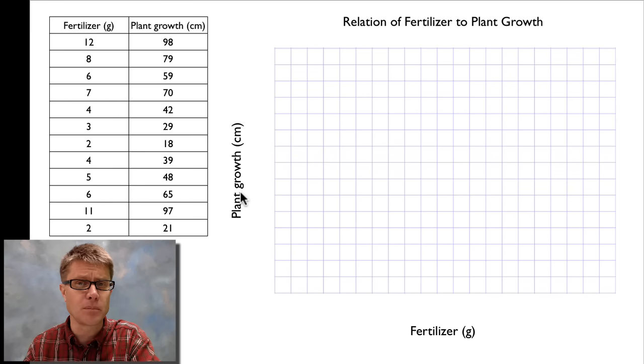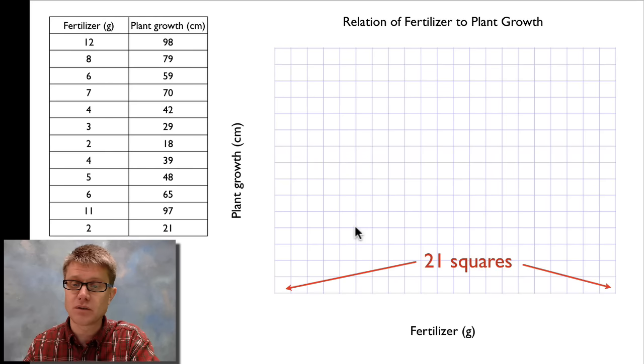Next thing I want to do is I want to put numbers and tick marks or major grid lines on both the x and the y-axis. This is hard to do. Let's say you're doing a test and you're given this amount of graph paper. You want to make sure that you use all of the graph paper. That's going to give us a better graph and it's going to allow us to look at patterns in the data. First thing I want to do is count the number of squares. I count the total number of squares and it's 21 squares.